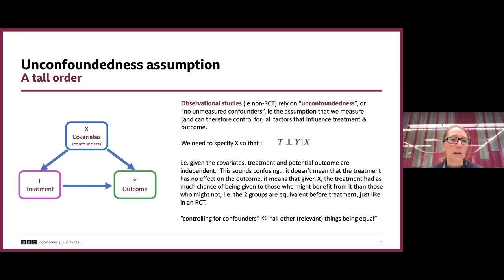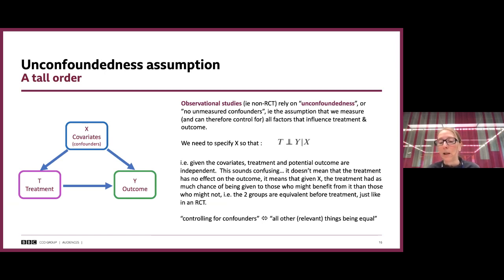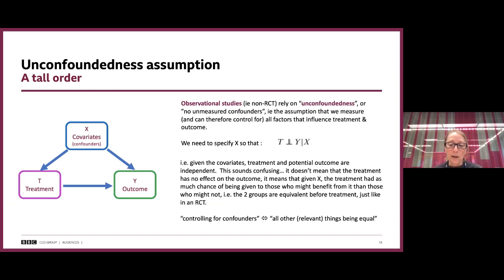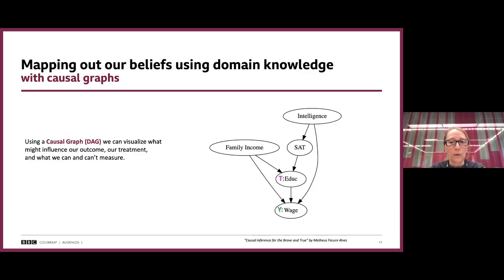Let's go deeper into unconfoundedness, the main assumption. Observational studies rely on the assumption of no unmeasured confounders — that we are measuring all factors influencing both treatment and outcome. In the literature it's specified as T independent of Y given X. It's not saying the treatment has no impact on the outcome; rather, given covariates X, the treatment has as much chance of being given to those who might benefit as to those who might not — going back to the idea of having two equivalent groups before treatment, as you would have in an RCT.